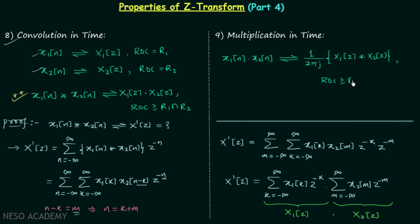The region of convergence will be greater than or equal to R1 intersection R2. Since the Z-transforms are convolved, we call this property convolution in Z domain. The proof of this property is homework for you — you can refer to the multiplication in time property of the Fourier transform and use that idea to prove the multiplication in time property of the Z-transform.